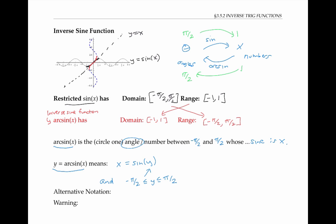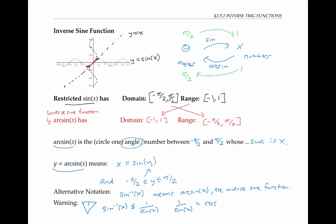That was the whole point of doing this domain restriction — in order to get a well-defined inverse value. There's an alternate notation for inverse sine: sometimes it's written as sine to the negative one of x. But this notation can be confusing, so be careful. In particular, sine to the negative one of x does not equal one over sine of x. One over sine of x, the reciprocal function, is another word for cosecant of x. But sine to the negative one of x is another word for arc sine of x, the inverse sine function, which is not the same thing as the reciprocal function.